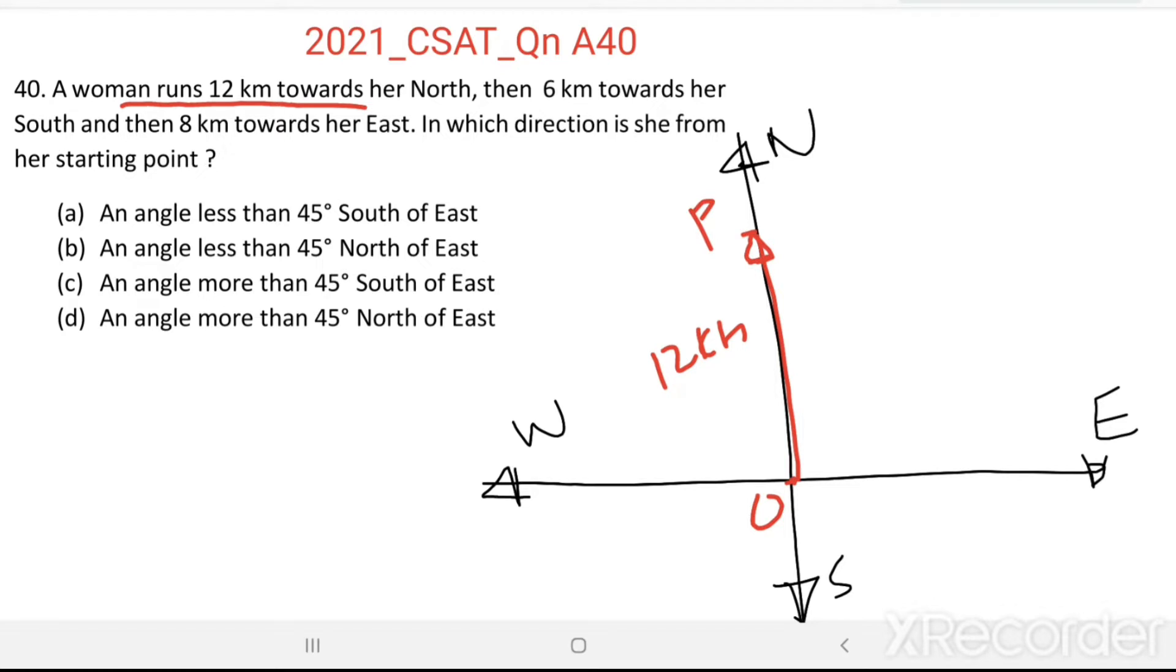Then from P, 6 km towards her south. 6 km towards her south, and she reached a point A. Then OA equal to 12 minus 6, we get 6 km.